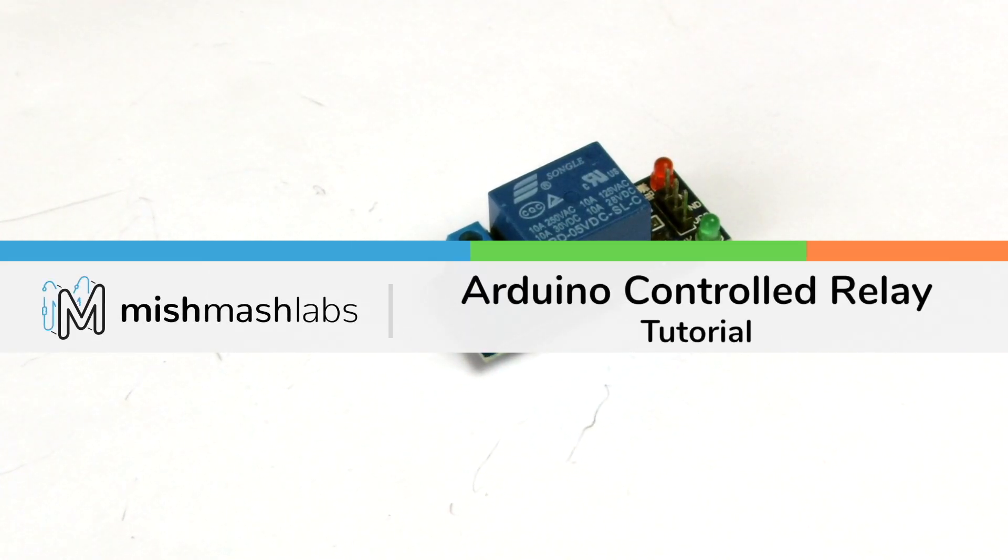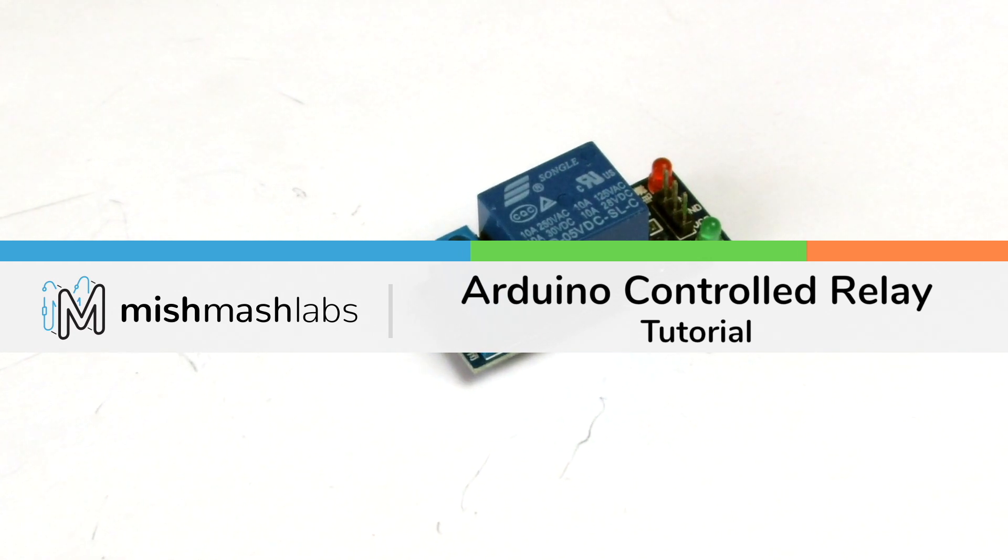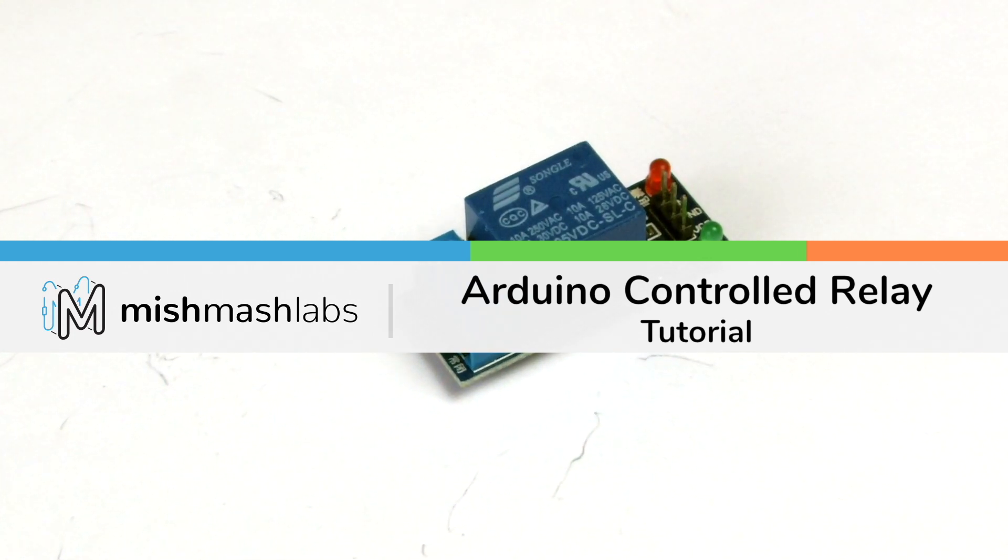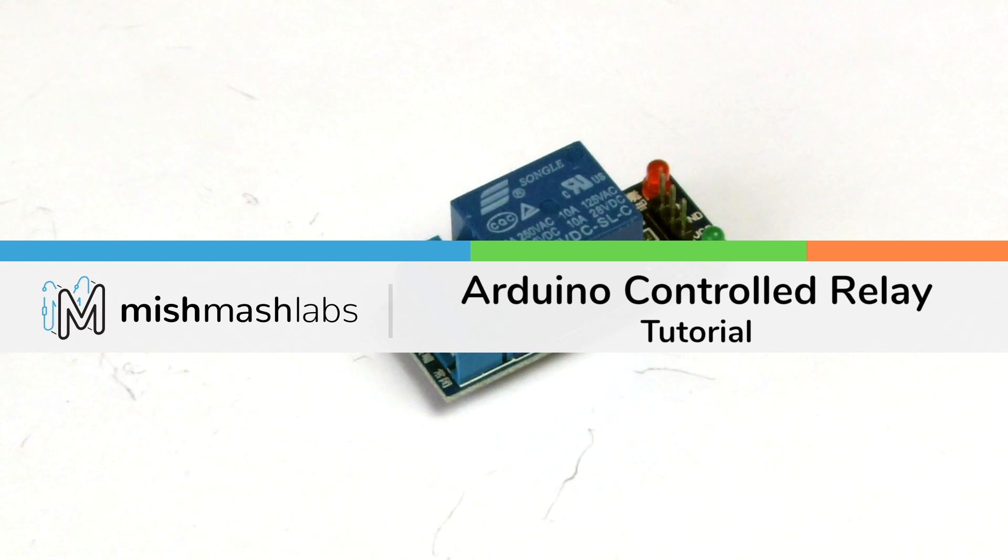We're going to control this relay with an Arduino Nano. To control high voltage and high power circuits with an Arduino, you have to isolate them from the Arduino with a relay.